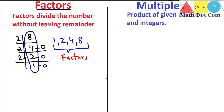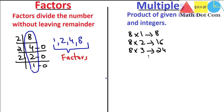Multiples are basically the product of a given number and integers. If I ask you to find the multiples of eight: eight multiplied by one is eight, multiplied by two is sixteen, multiplied by three is twenty-four, and so on. So the multiples of eight are eight, sixteen, twenty-four, and so on.